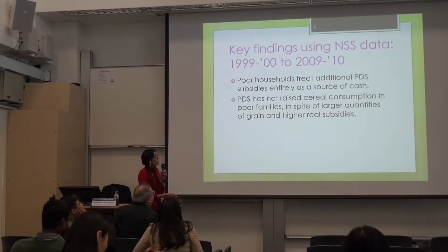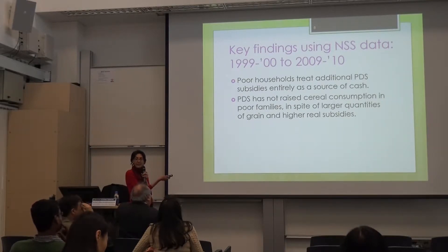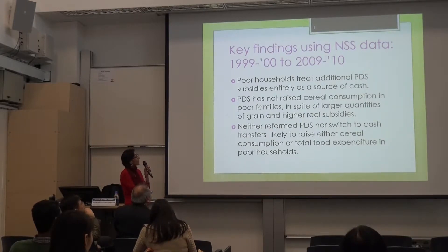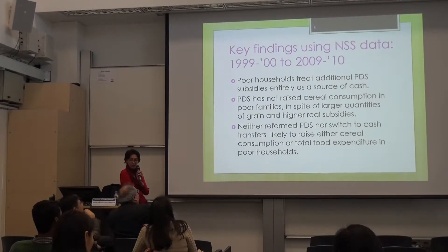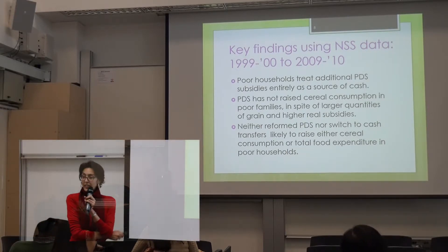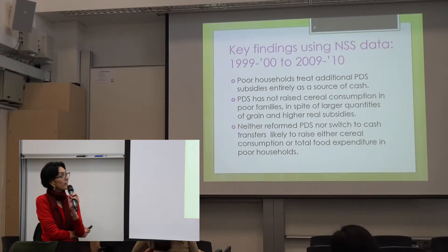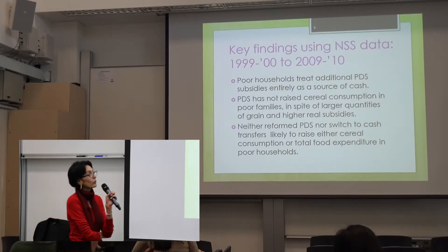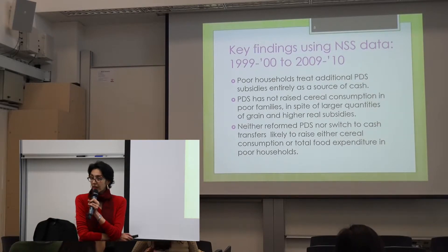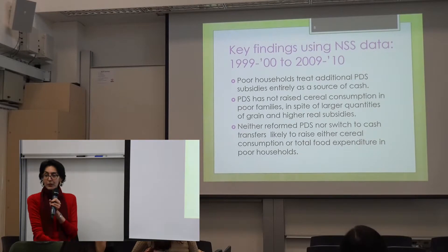My paper uses national sample survey data — that's the NSS — over a period of 11 years, using three rounds. My key findings are these: poor households have treated all additional PDS subsidies as a cash transfer. They have not increased cereal consumption, in spite of the fact that the PDS actually gave them larger real quantities of grain and higher real subsidies. The final conclusion is also that neither the reformed PDS nor the switch to cash transfers is going to raise cereal consumption or, more importantly, even total food expenditure in poor households.